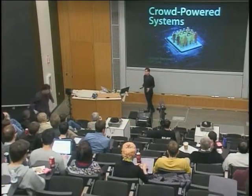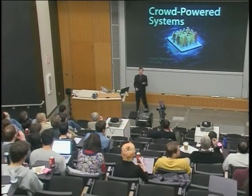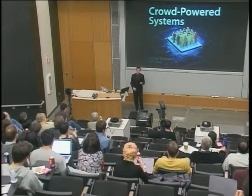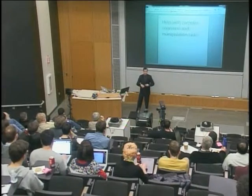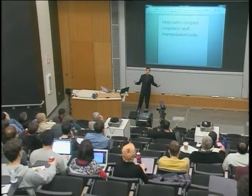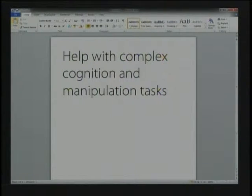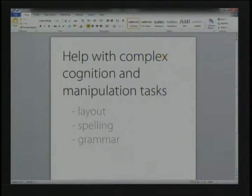Today I'm going to talk about crowd-powered systems, which are interactive systems that embed human intelligence in the form of large crowds of people interacting online. To set the stage, I'll start with the word processor, which might be the most heavily designed and heavily used interactive system ever. Like most interactive systems, it supports a complex cognitive process — writing — by offloading tasks the user might not want to do. We have dynamic programming algorithms for aesthetic layout, language models for spelling, and grammar checking support.